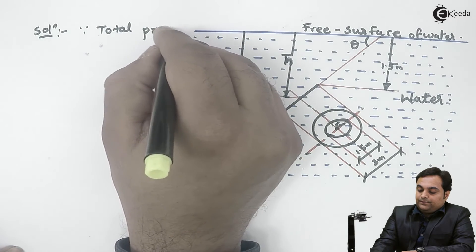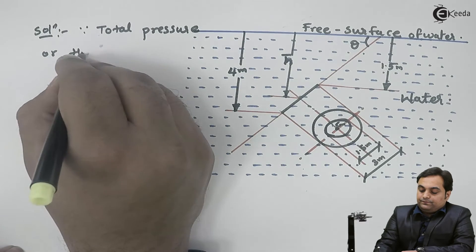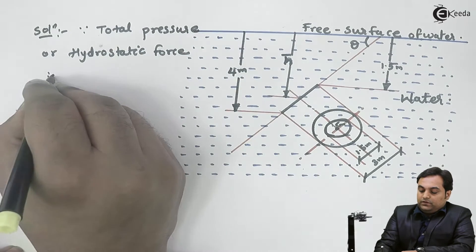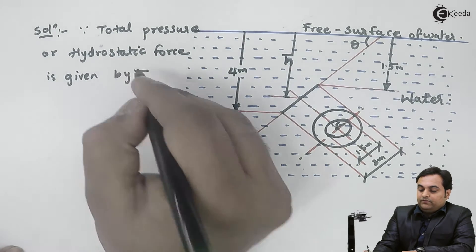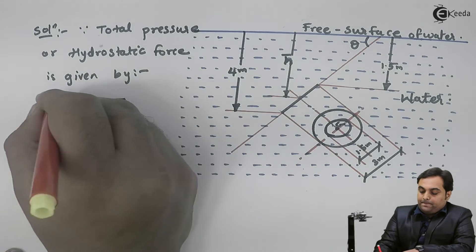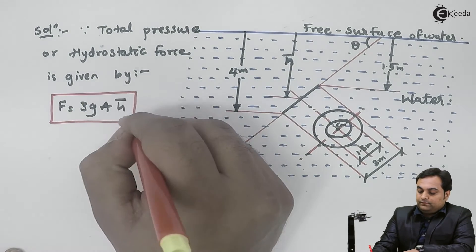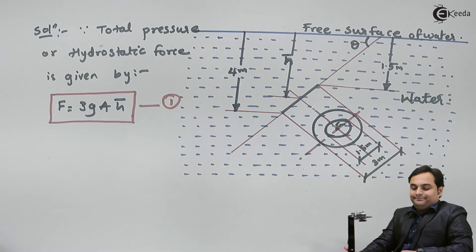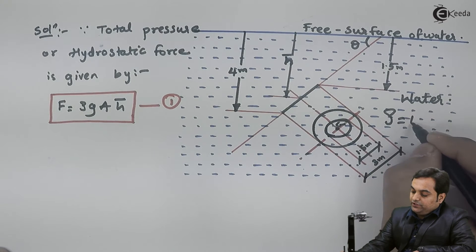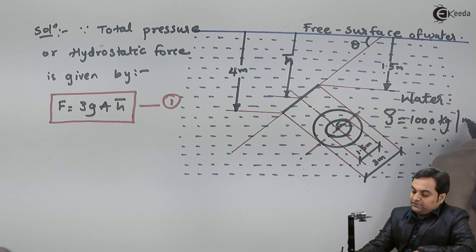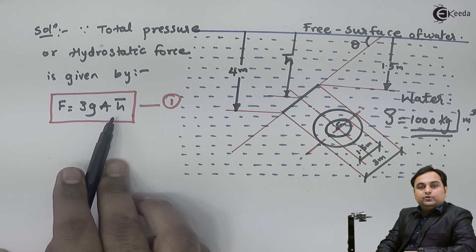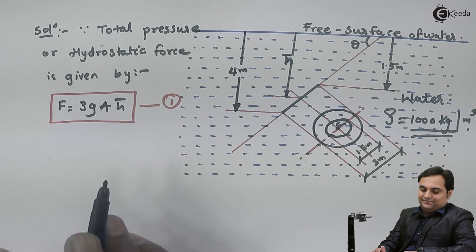The total pressure or hydrostatic force is given by: F equals rho times G times area times H bar — this is equation number one. Here rho is the density of water, which is 1000 kg per cubic meter. G is 9.81. Area is already known. The only unknown is H bar, so if H bar is known this problem is solved.